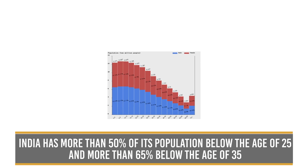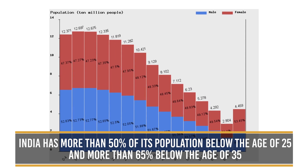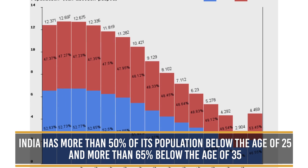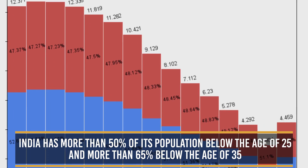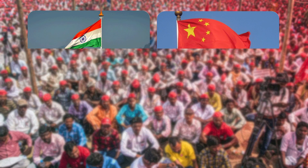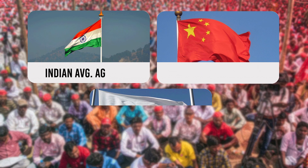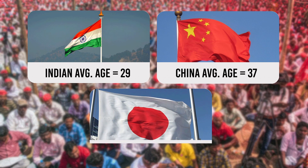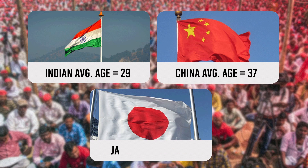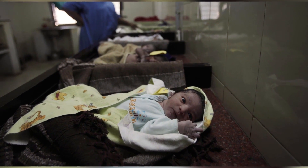India has more than 50% of its population below the age of 25 and more than 65% below the age of 35. It is expected that in 2020, the average age of an Indian will be 29 years, compared to 37 for China and 48 for Japan. By 2030, India's dependency ratio should be just over 0.4.